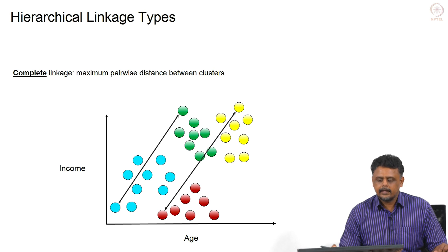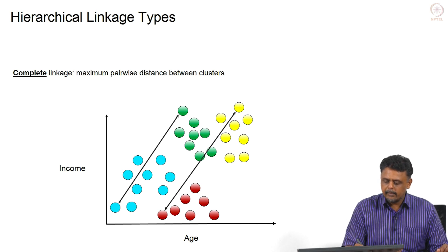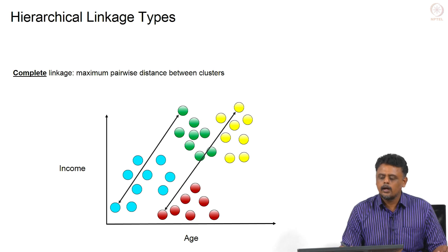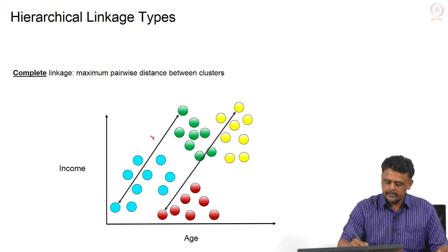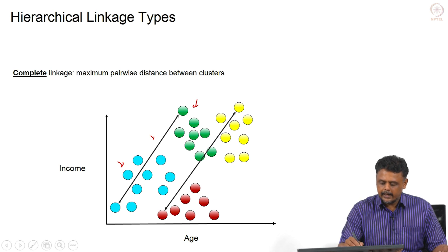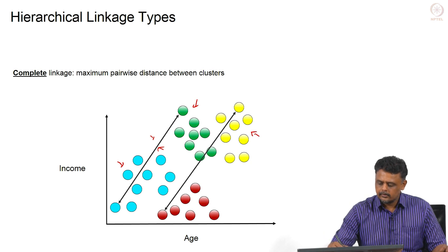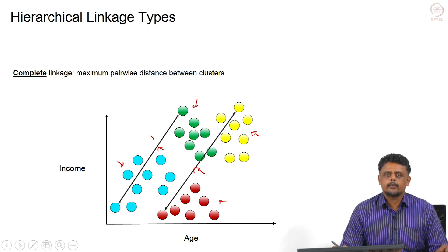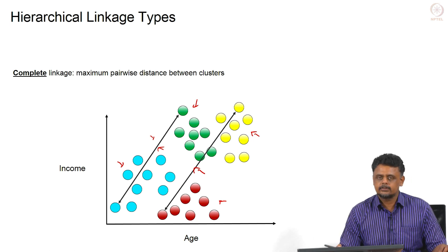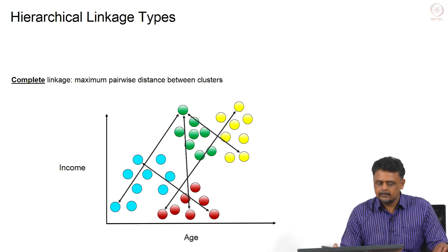Complete linkage calculates the maximum pairwise distance between clusters. It finds the maximum distance between data points across the two clusters. In the illustration, between the green and light blue clusters, the black arrow represents the maximum pairwise distance between elements in those clusters. Similarly, between the yellow and red clusters, the arrow represents the maximum pairwise distance. We do this for all pairs of clusters, calculating the maximum pairwise distance and using that as the dissimilarity metric.